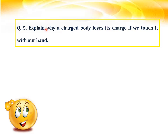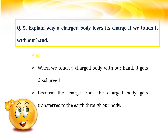Question number five: explain why a charged body loses its charge if we touch it with a hand. In the first video of this chapter we conducted an experiment with an electroscope, where we saw that when we touch the charged refill with a hand, the aluminum strips collapse. When we touch a charged body with a hand, it gets discharged because the charge from the charged body gets transferred to the earth through our body. As human beings are good conductors of electricity, when we touch a charged body, the charge is conducted to the earth, thereby discharging the charged body.